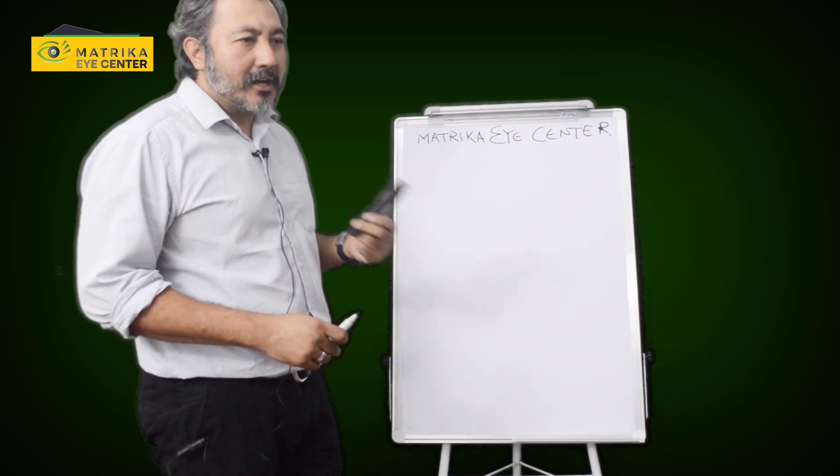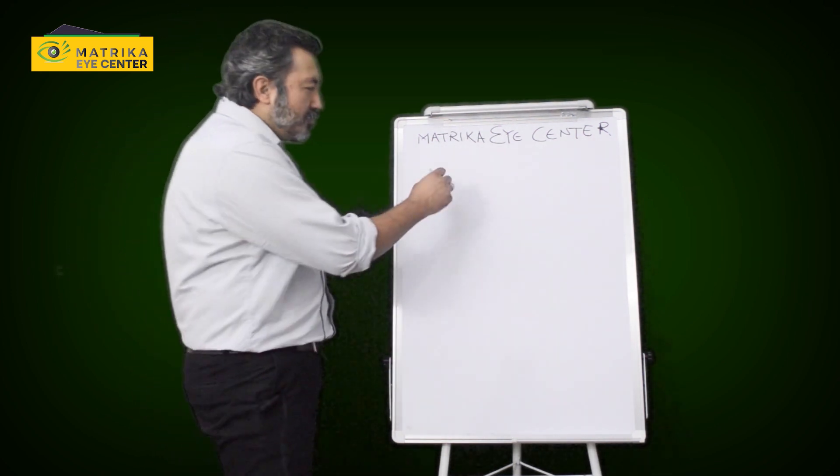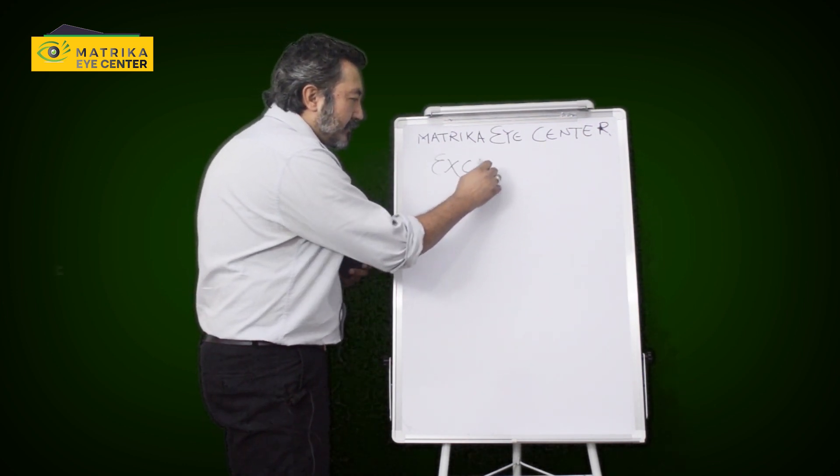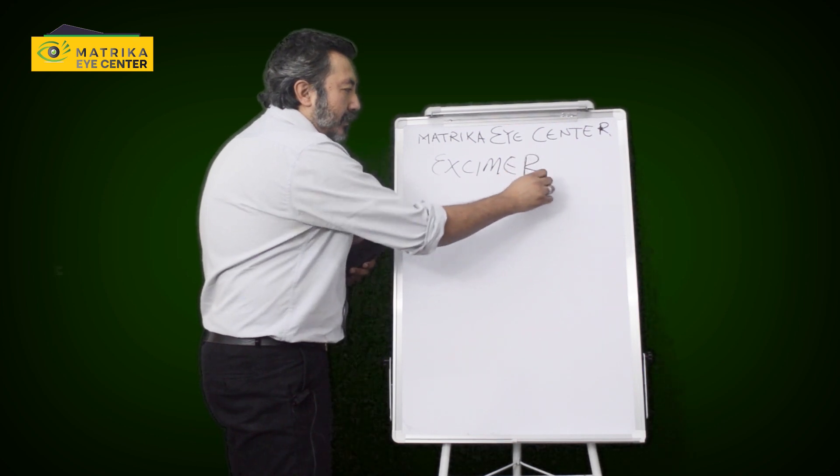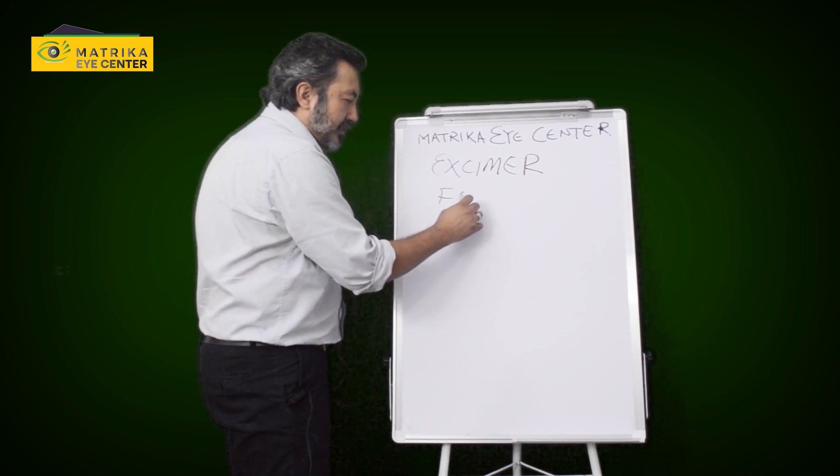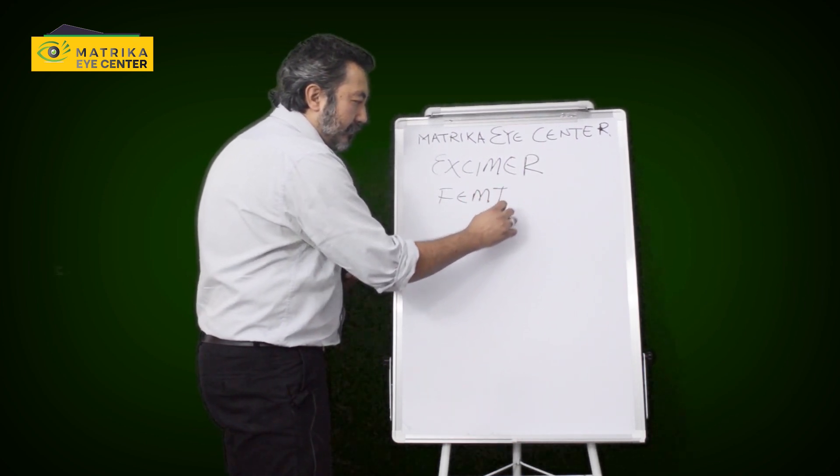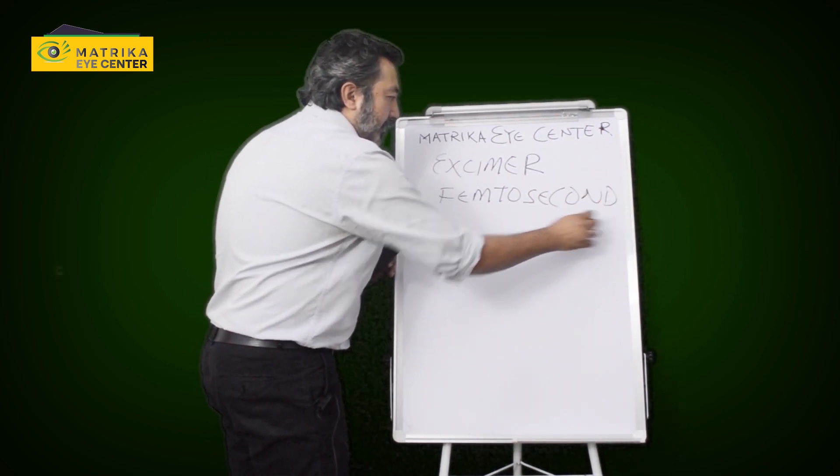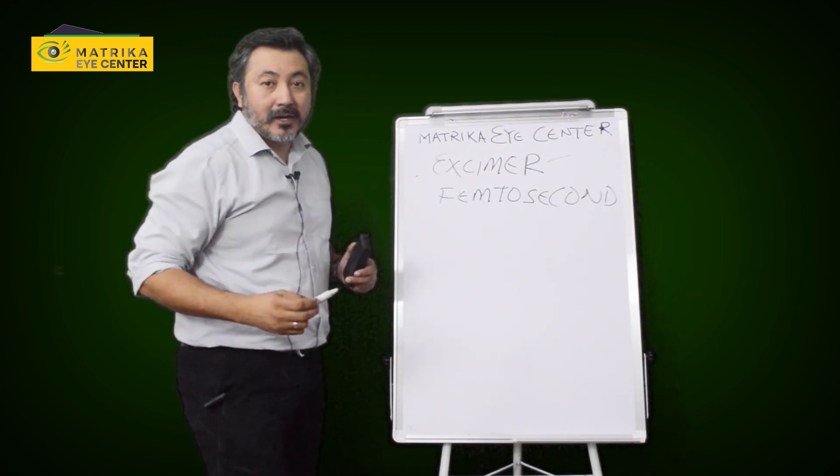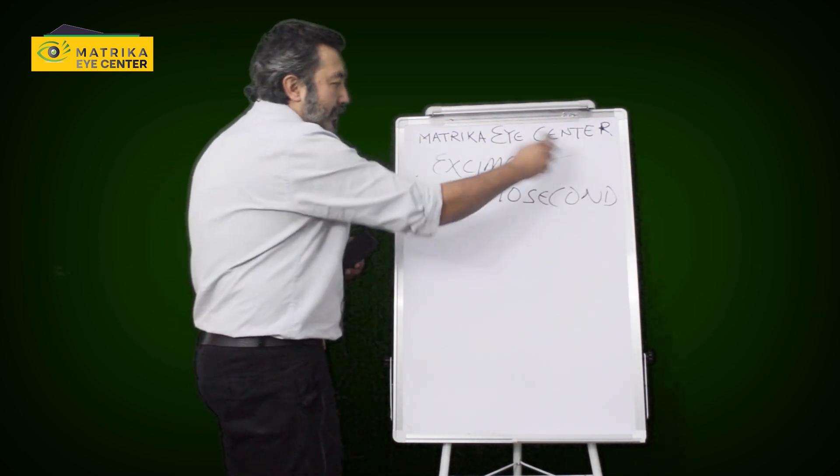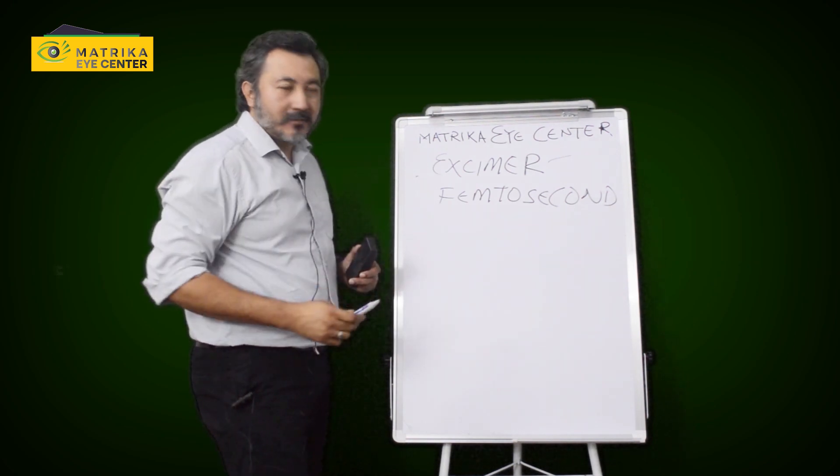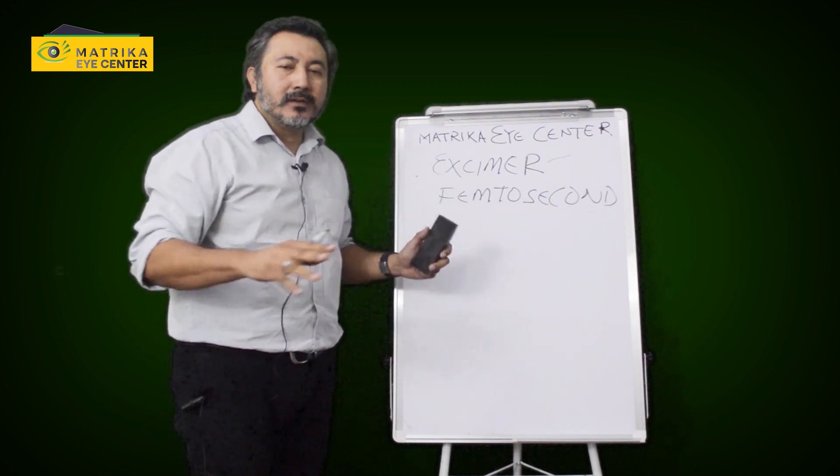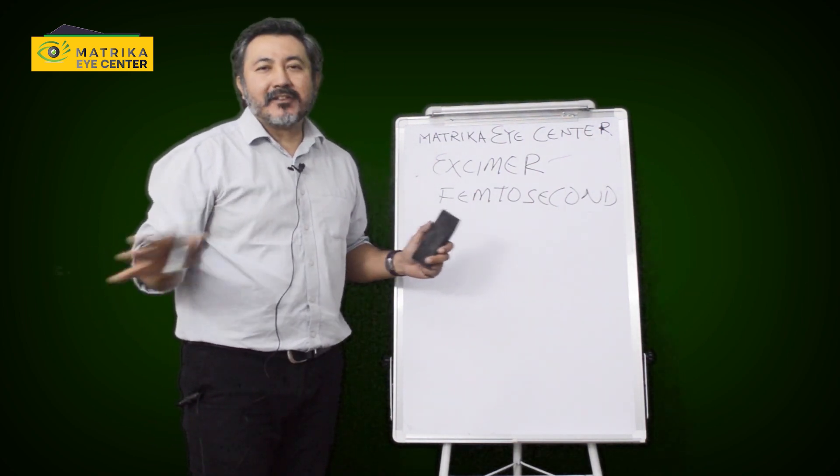Before I start, I want to tell you a little bit about lasers. There are two main lasers in the real laser platform. One is called Excimer laser and one is called the femtosecond laser. So at the Matrika Eye Center where I work now, we have both lasers. We have the Excimer laser and the femtosecond laser. These are the only two laser platforms and nothing else.